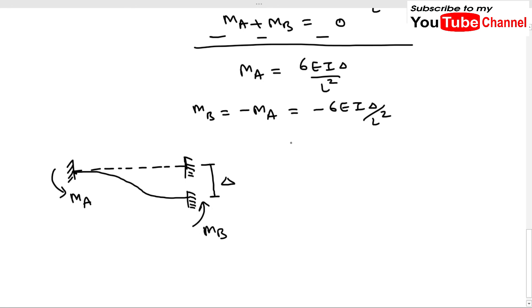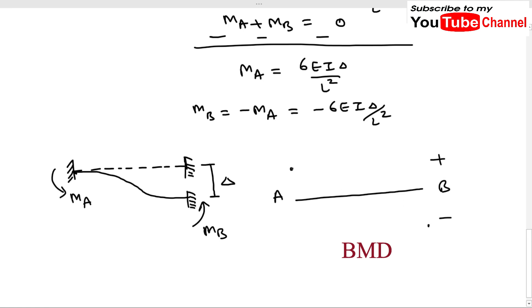We can now draw the bending moment diagram. Taking positive upward and negative downward: M_A is positive and M_B is negative, and both values are numerically equal to 6EIδ/L². This is a very important point — the magnitudes of M_A and M_B are the same, but their directions are different.